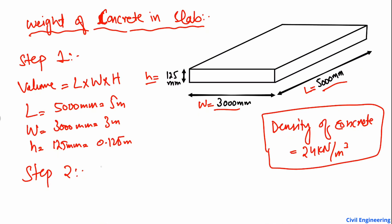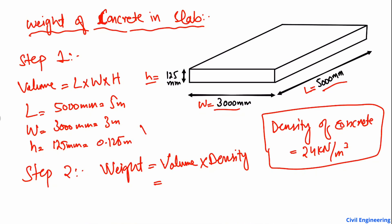The second step is to multiply the density with the volume. To find out the weight of concrete in a slab, we multiply the volume by the density. The volume is equal to length × width × height: 5 meters × 3 meters × 0.125 meters, which gives us a volume of 1.875 cubic meters. This is the volume of concrete in this slab.